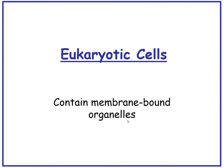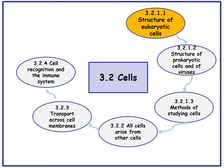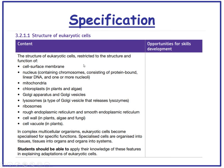Eukaryotic cells contain membrane-bound organelles. Looking at the overview of the cells topic, we are looking at the structure of eukaryotic cells. The specification covers the structure and function of: cell surface membrane, nucleus, mitochondria, chloroplasts, Golgi apparatus and Golgi vesicles, lysosomes, ribosomes, rough endoplasmic reticulum and smooth endoplasmic reticulum, cell wall, and cell vacuole.